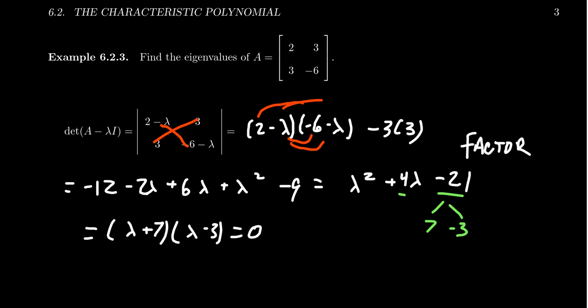If we set the characteristic polynomial equal to zero, we can set each of these factors equal to zero. Lambda plus seven equals zero would imply that lambda equals negative seven. And lambda minus three equals zero would imply that lambda equals three. And so there we have it. We have the two eigenvalues for this matrix. They both have algebraic multiplicity of one, which forces the geometric multiplicity to likewise be one. If we wanted to calculate the eigenvectors associated to these eigenvalues, we could calculate their eigenspaces using the techniques we've talked about before.